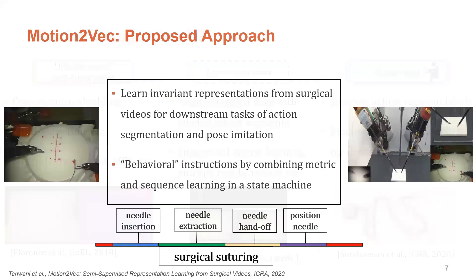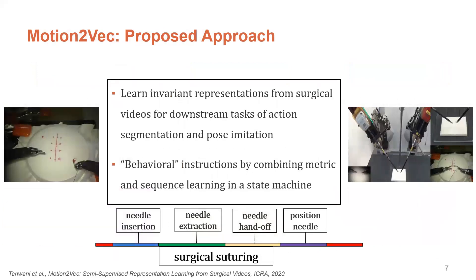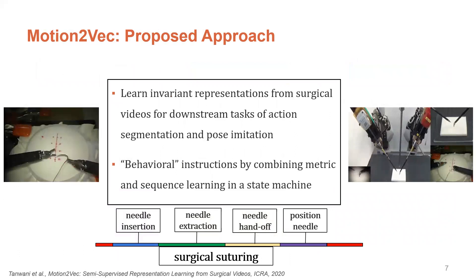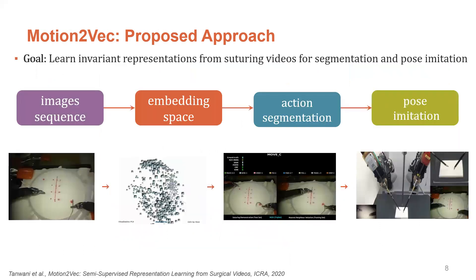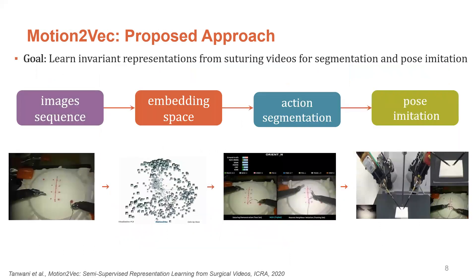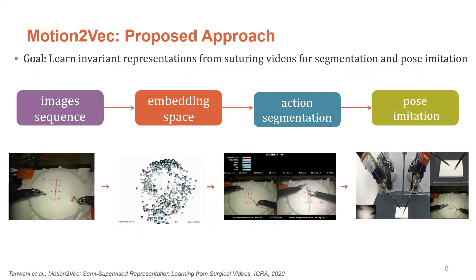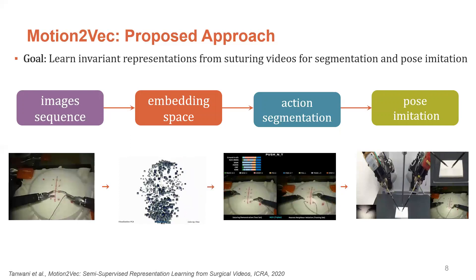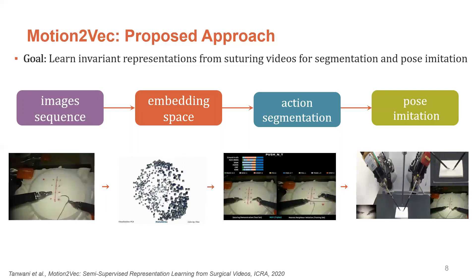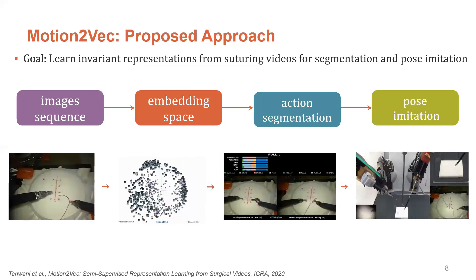The main problem addressed in this paper is to learn invariant state representations from surgical videos for downstream tasks of action segmentation and pose imitation. The learned segments are encoded as a set of behavioral instructions in a state machine for robot imitation. In the first stage, we learn an invariant low-dimensional embedding space from videos by minimizing a metric learning and a sequence learning loss. The embedding space is further used for prediction of action segments and pose imitation in the context of surgical suturing.